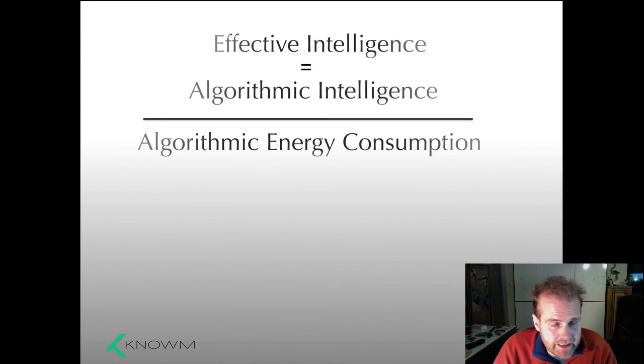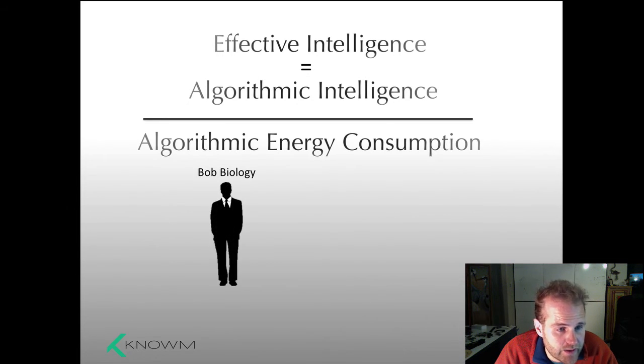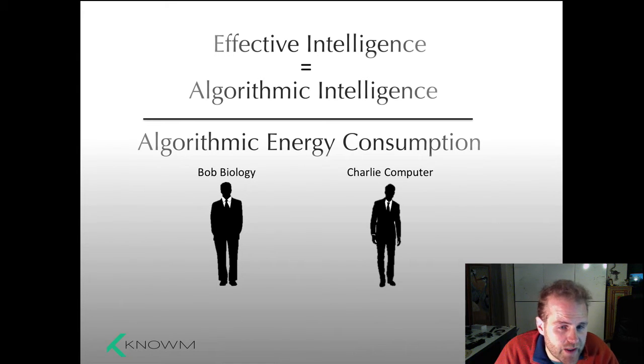What we need is what I call effective intelligence. Effective intelligence is what you get when you divide algorithmic intelligence by the energy consumption of the algorithm. Let me give you an example. Let's say we have Bob Biology over here and we have Charlie Computer. Charlie Computer is nice and slick. You give them a question and they give you the same answer—we've achieved parity with algorithmic intelligence.